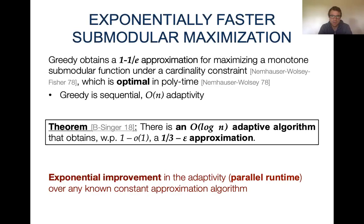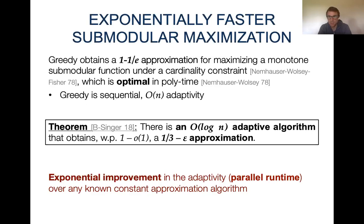However, greedy is highly sequential — it requires linear adaptivity. Until very recently, all of the algorithms known for submodular maximization had linear adaptivity. There is now a result showing that we can obtain a log-n adaptive algorithm that achieves a constant factor approximation for submodular maximization.